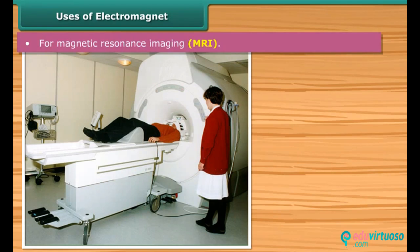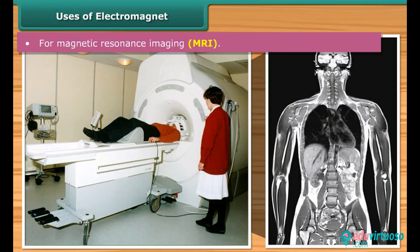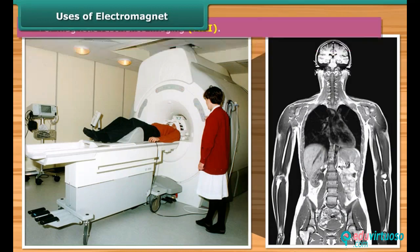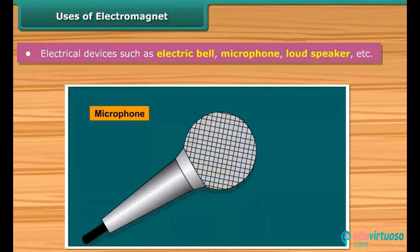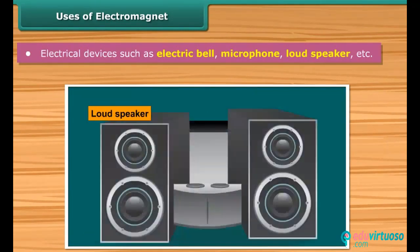Electromagnets are also used for magnetic resonance imaging, getting a detailed image of the inside of the body to diagnose a number of diseases. A variety of electrical devices such as electric bell, microphone, loudspeaker, etc. make use of electromagnets.